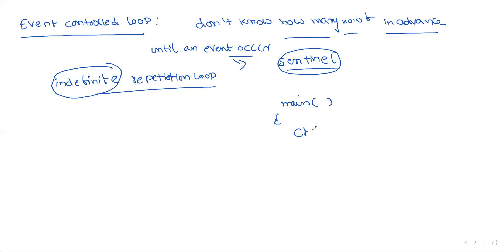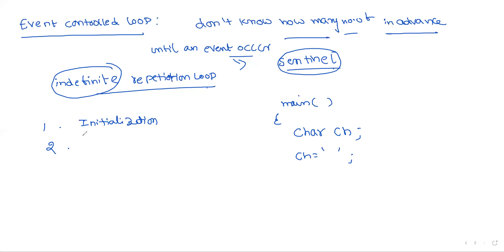For example: char ch — we are reading a character, initially character is empty. Before the loop begins, first we perform some initialization. Next we write a condition in the while loop — the condition tests whether the terminating event has occurred or not. For example: while (ch != 'x').